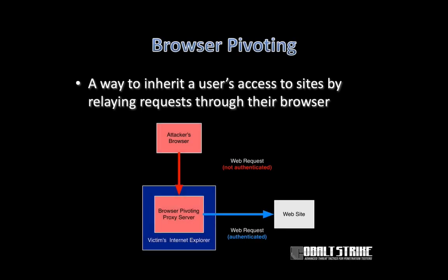The last type of pivoting to cover is an application layer pivot called browser pivoting. Imagine you're on a target, you take a screenshot, and you see the end user is interacting with a high-value web application using Internet Explorer. Browser pivoting becomes a way for you to use your own browser, relay requests through their browser, and have those requests authenticate as that end user — allowing you to silently interact with that website as that user. It is Internet Explorer only, which is a downside, but when you can use it, it is really, really cool.